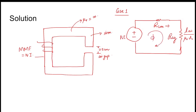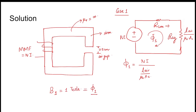So phi_1 equals MMF (NI) divided by R_ag, which is NI times mu_0 times A_c divided by L_air_gap. B of Case 1, that is B₁, is given to be 1 tesla. This equals phi_1 divided by A_c. So NI times mu_0 divided by L_air_gap equals 1 tesla.